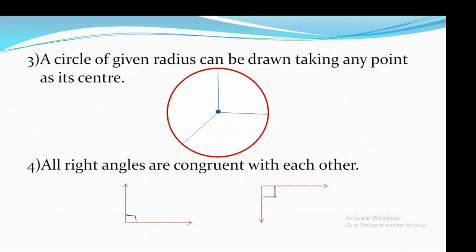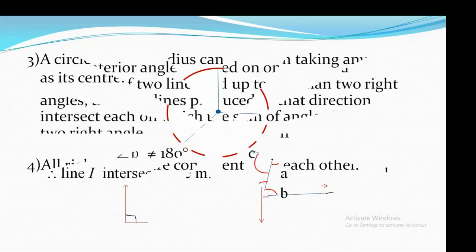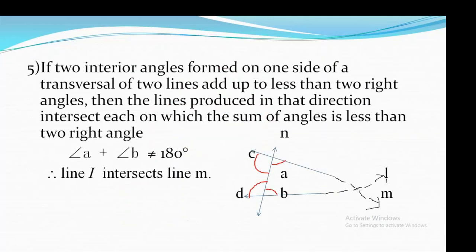The fourth postulate: all right angles are congruent with each other. Definitely all right angles are congruent with each other because their measures are 90 degrees. Now, Euclid's fifth postulate — Euclid's fifth postulate is very important.